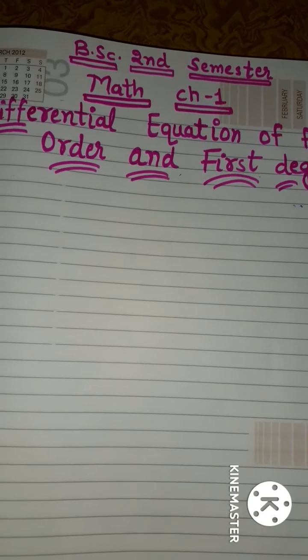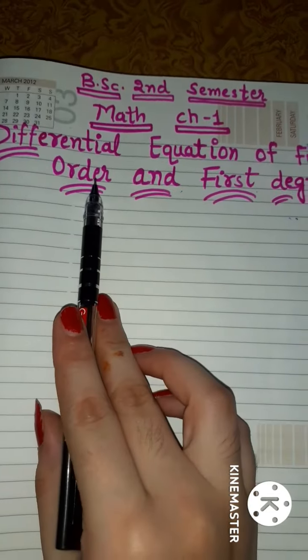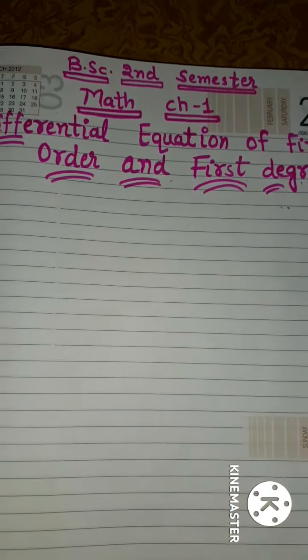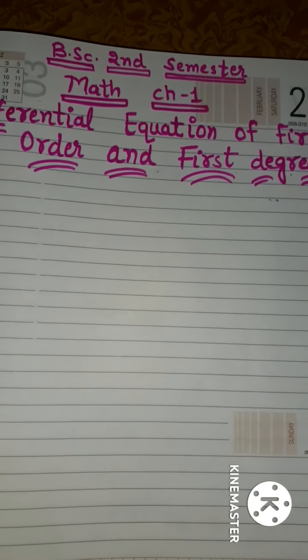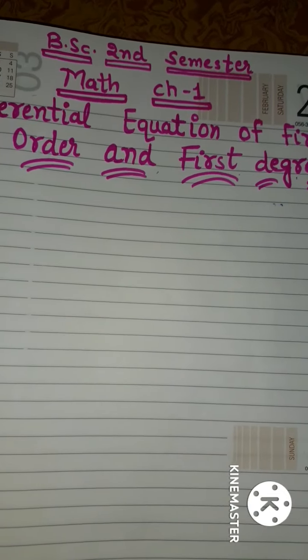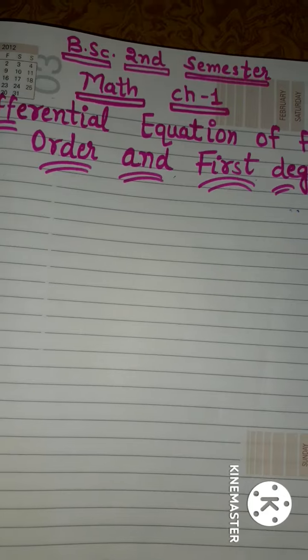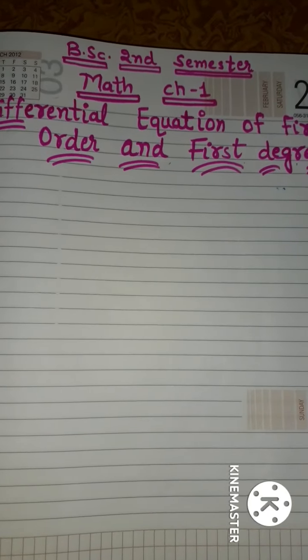मतलब किसी equation में जो highest derivative होती है, वो उसका order कहलाता है। और degree की बात करें तो किसी equation में highest derivative की जो power होती है वो उसकी degree कहलाती है — degree of highest derivative in the equation is called degree of the differential equation। एक-दो examples से आपको clear हो जाएगा।